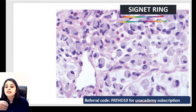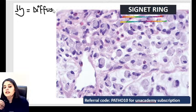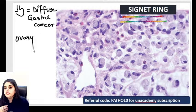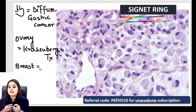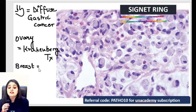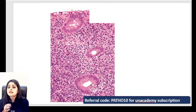Signet ring cells in different organs: in the stomach — diffuse gastric cancer. In the ovary — Krukenberg tumor. In the breast — invasive lobular carcinoma can also show signet ring cells. So in the exam: stomach → diffuse gastric cancer; ovary → Krukenberg tumor; breast → invasive lobular carcinoma.